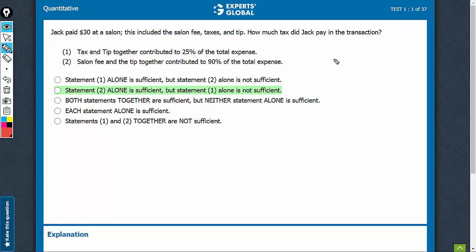The payment of $30 had three parts. It had tax, it had tip, and it had the fee. The question is asking, how much of this was tax? So, tax was how much?